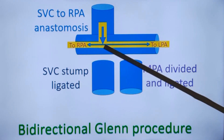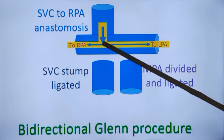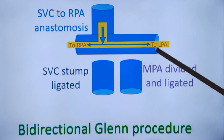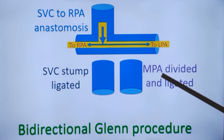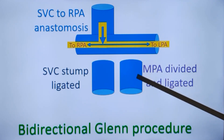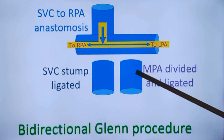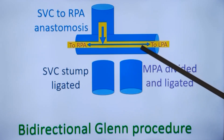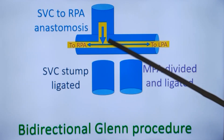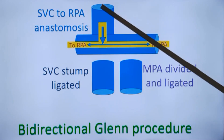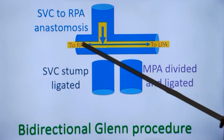This enables flow of superior vena cava blood to both the right pulmonary artery and left pulmonary artery. In most cases, the main pulmonary artery is divided and ligated so that there is no connection from the main pulmonary artery to the left or right pulmonary arteries. So blood goes either way.